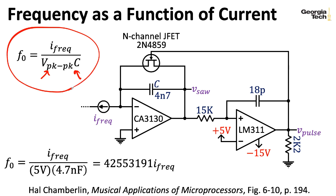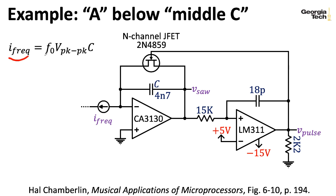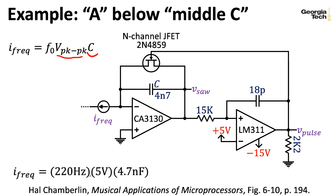Rearranging the expression, to find what current we need to generate a particular frequency, we multiply by the peak-to-peak voltage and by the capacitance. If I plug in 220 hertz — which is the A below middle C, just some frequency you can find on a piano — and multiply everything out, I get 5.17 microamps. That's a small amount of current, but don't be surprised — the control currents in synthesizers are typically fairly small. Something like an operational transconductance amplifier starts to have issues above 1 or 2 milliamps depending on the particular OTA.